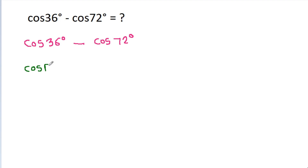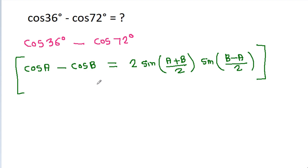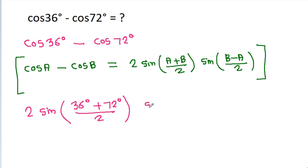We use the identity: cos A minus cos B equals 2 times sin((A minus B)/2) times sin((B minus A)/2). So cos 36 degrees minus cos 72 degrees becomes 2 times sin((36 minus 72)/2) times sin((72 minus 36)/2).